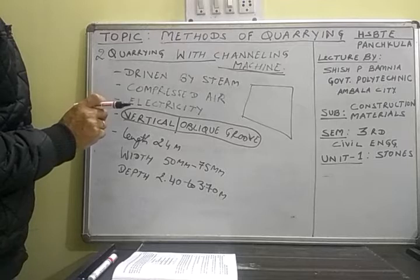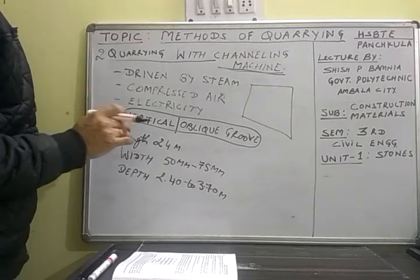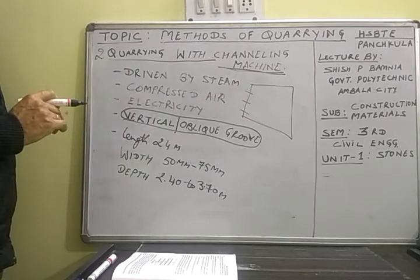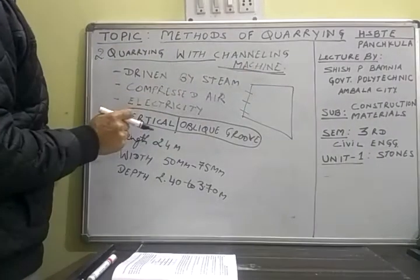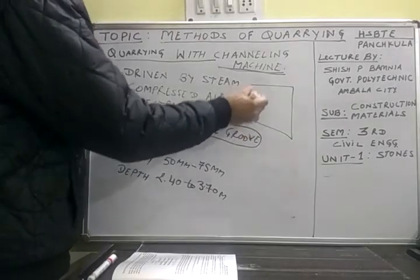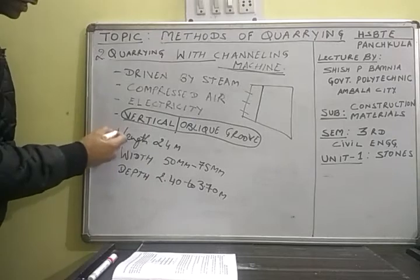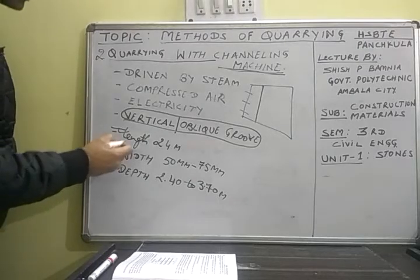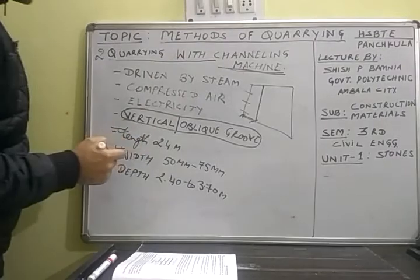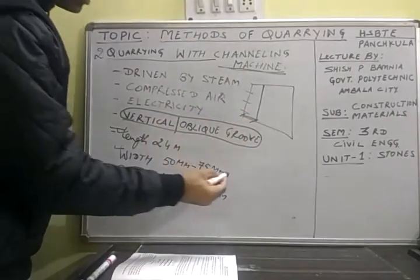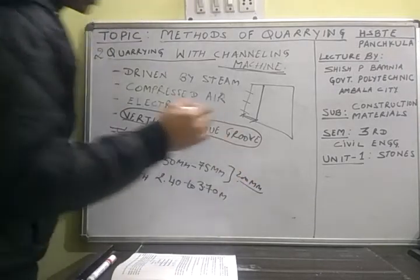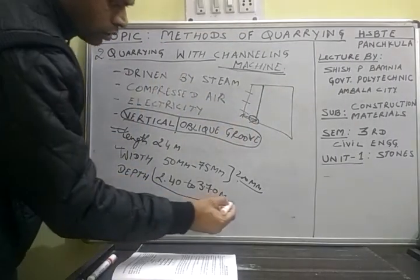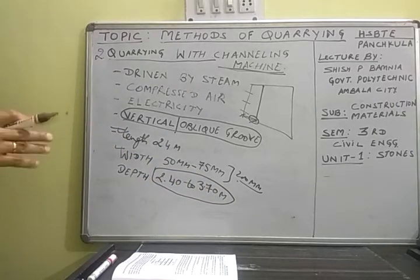This machine is a mechanical operation. This machine can go 24 meters in length — it has blade hammers. The width is 5275 mm, and now even 200 mm width is available. The depth is 2.4 meters to 3.7 meters.